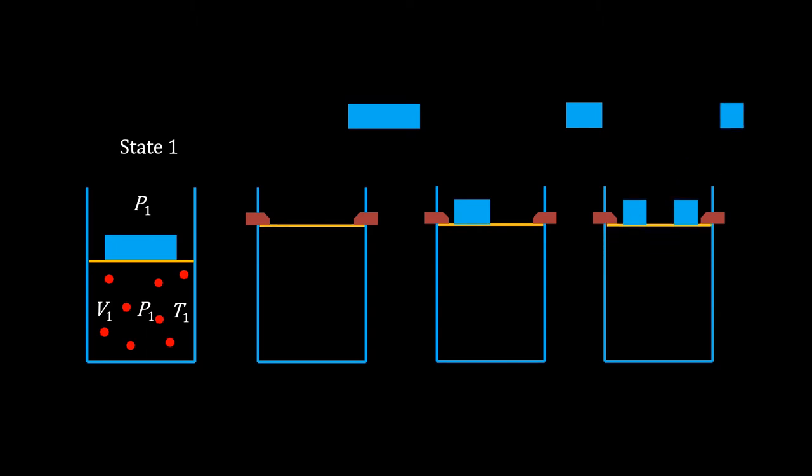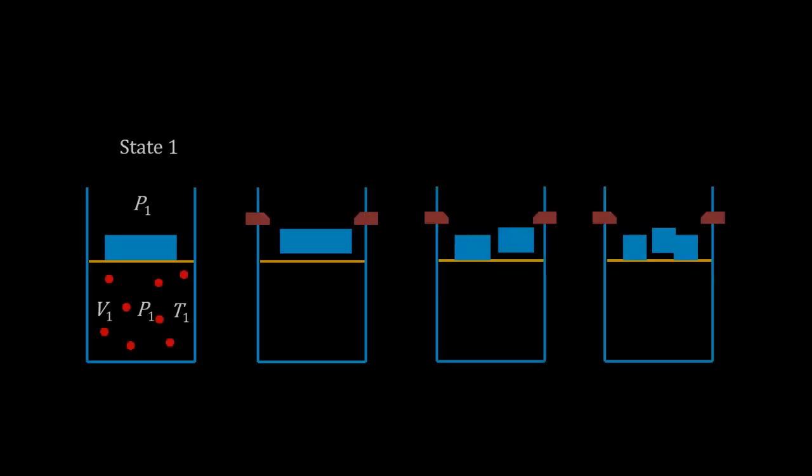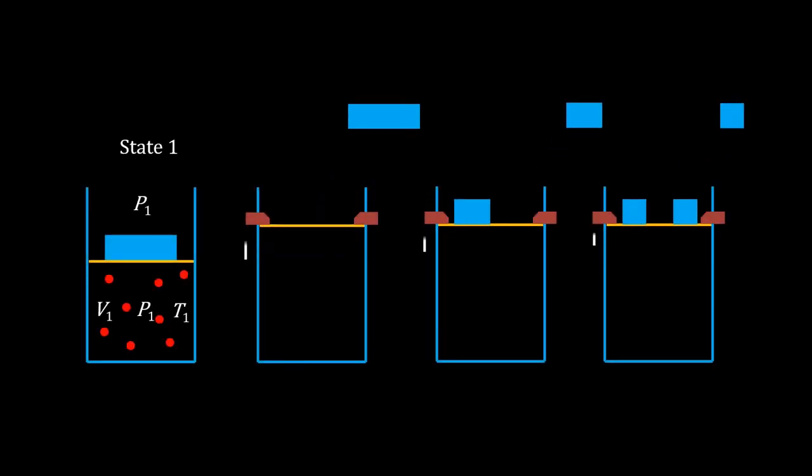Now break the mass into three pieces and imagine removing only one piece. The gas does even more work, lifting two thirds of the mass. Note that the velocity at which the piston moves gets lower and lower. Let's see these three together to appreciate the velocity difference.